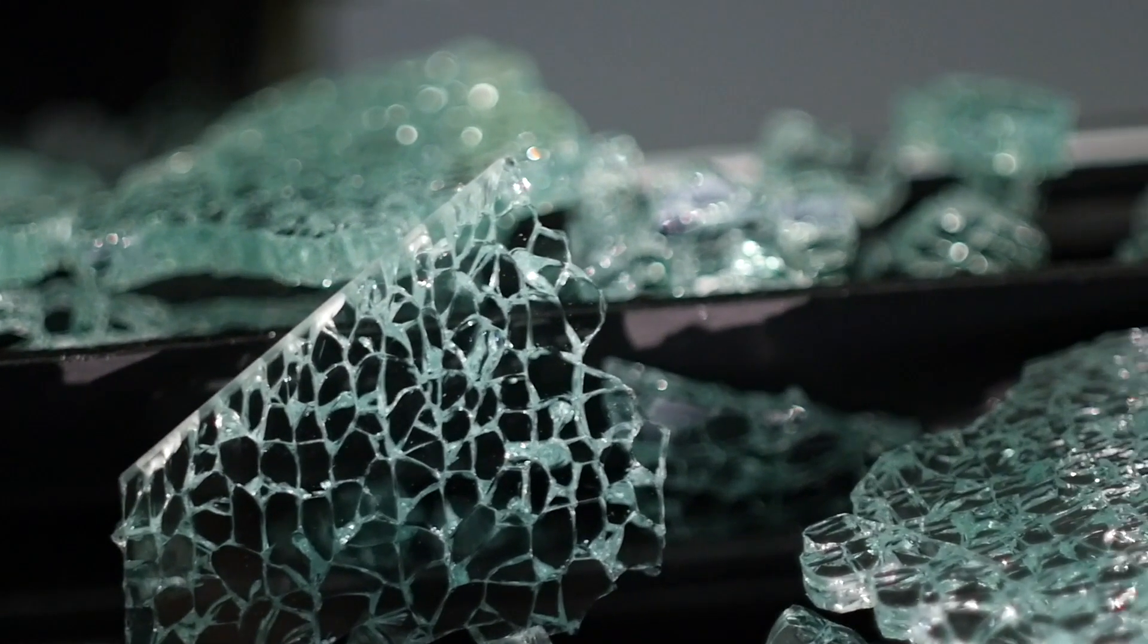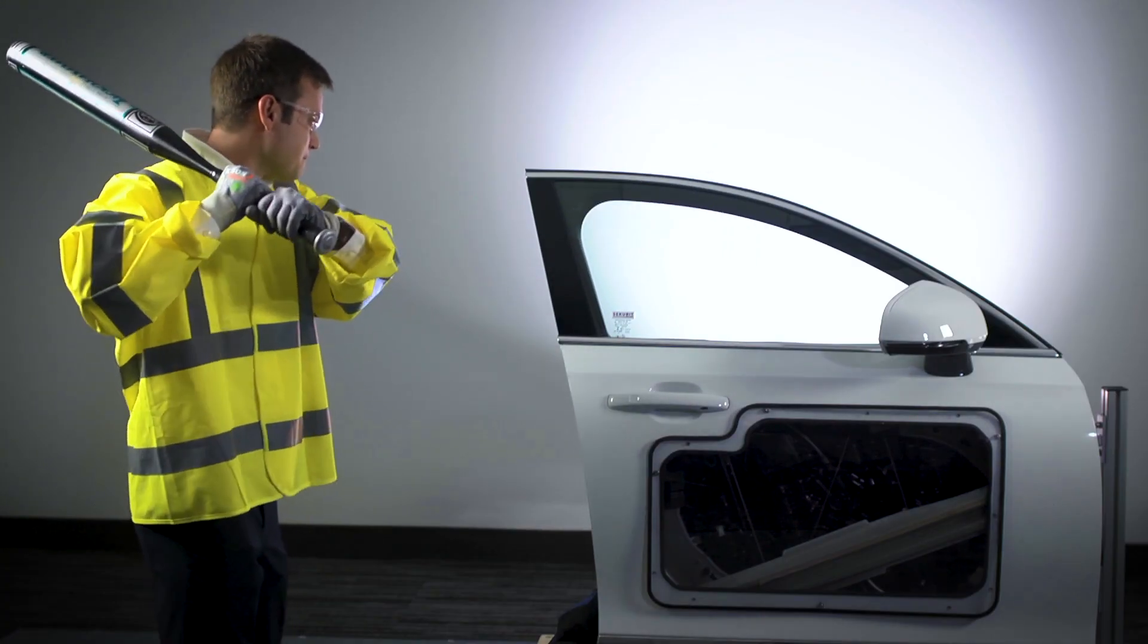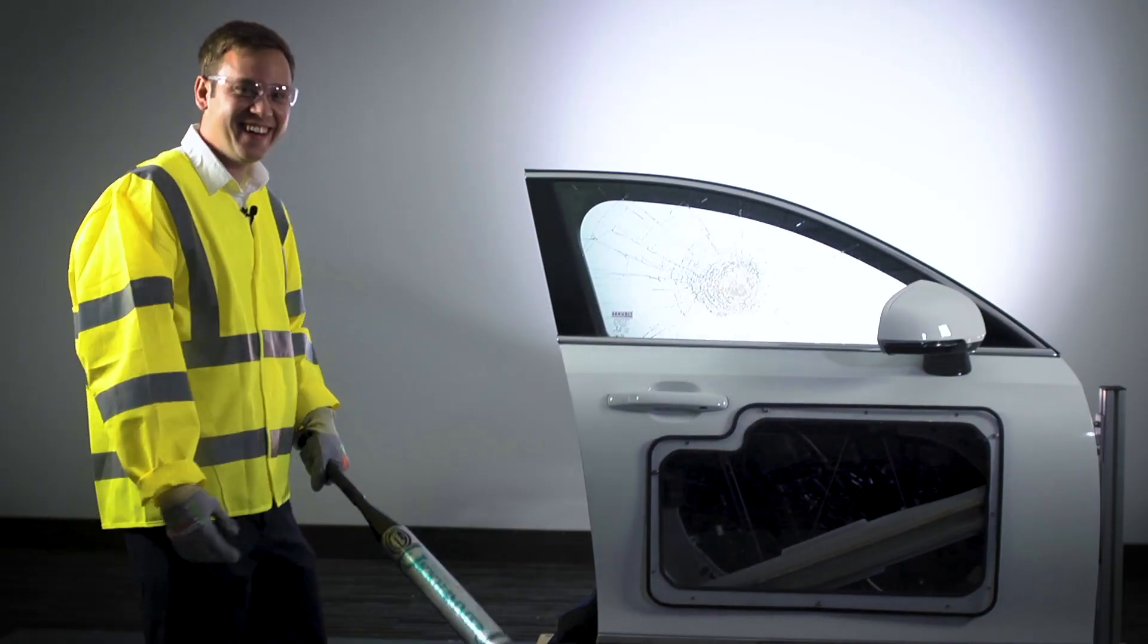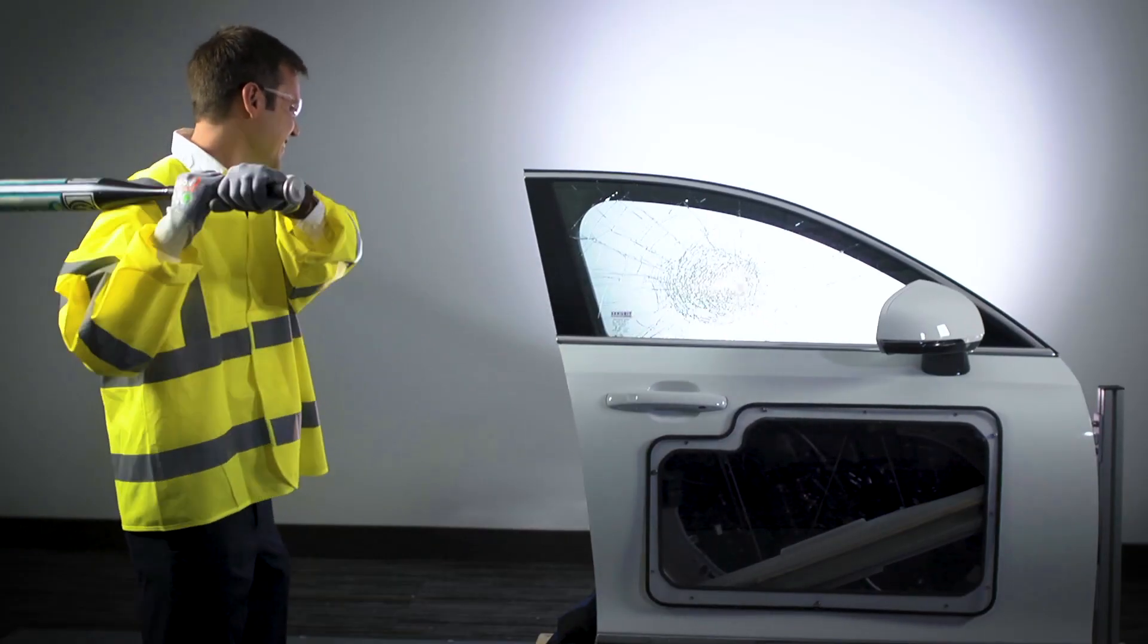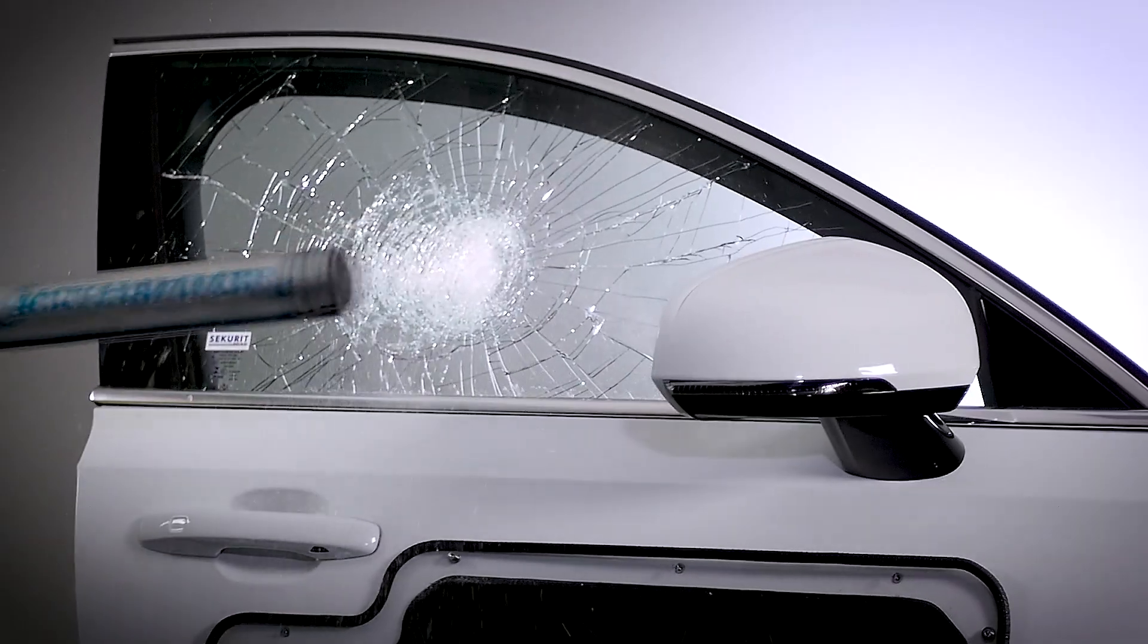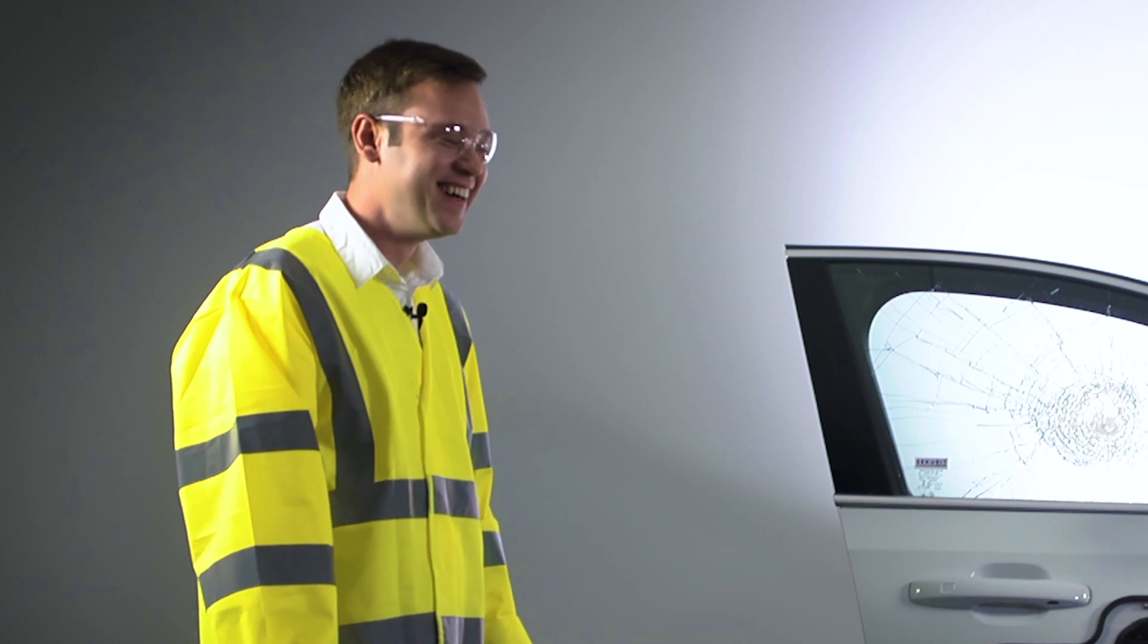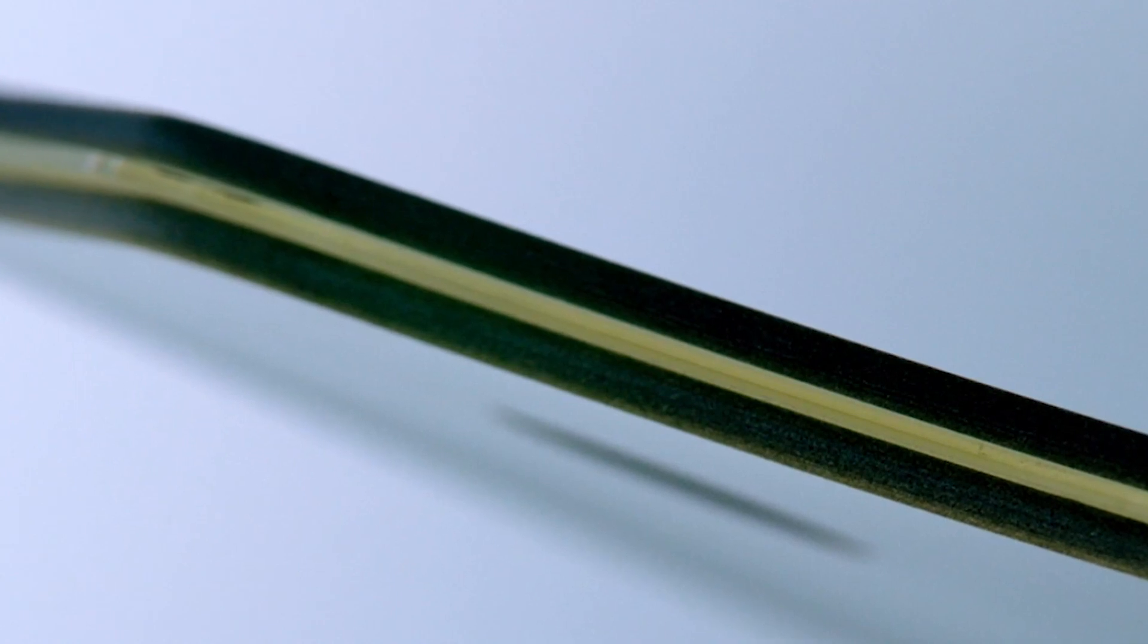Next up we have the laminated glass here and let's see how it holds up to an impact. So as you can see the laminated glass stays welded together and even after multiple hard hits it won't let the object pass through. This is thanks to the laminated glass design which bonds two sheets of glass with a transparent plastic layer in the middle which holds it all together when impacted.